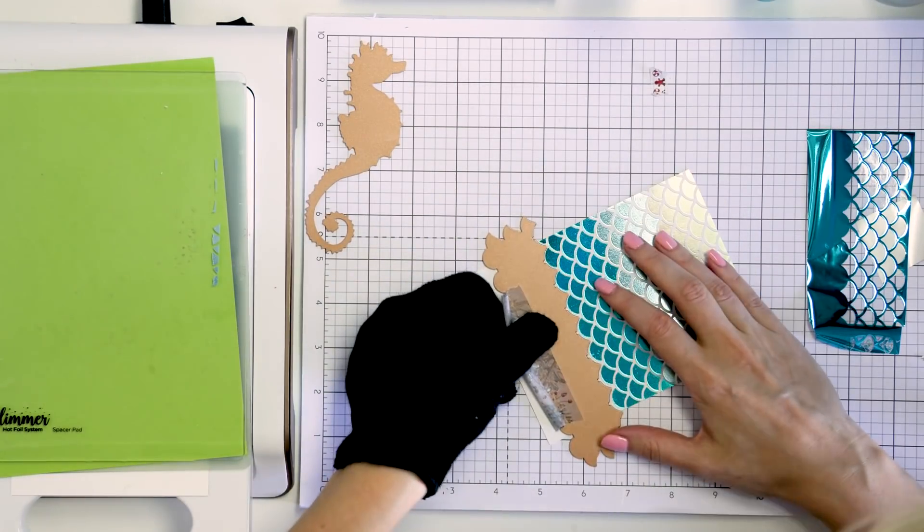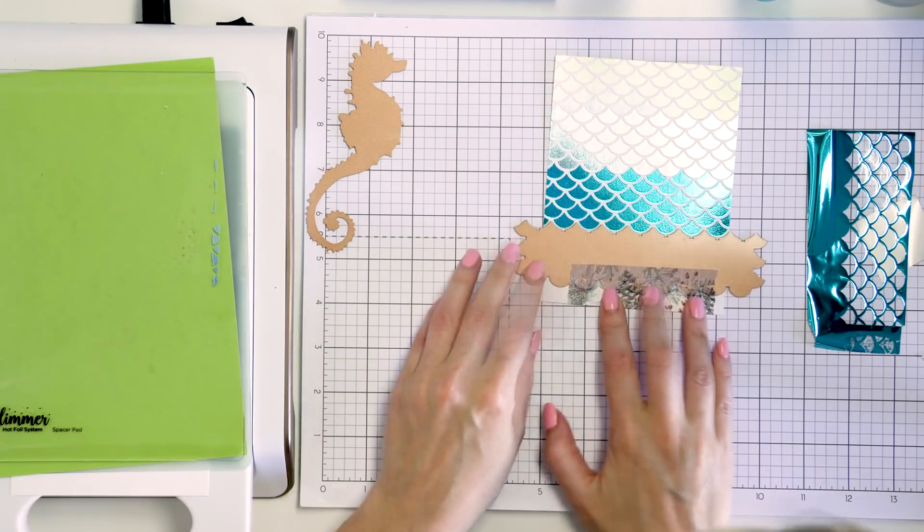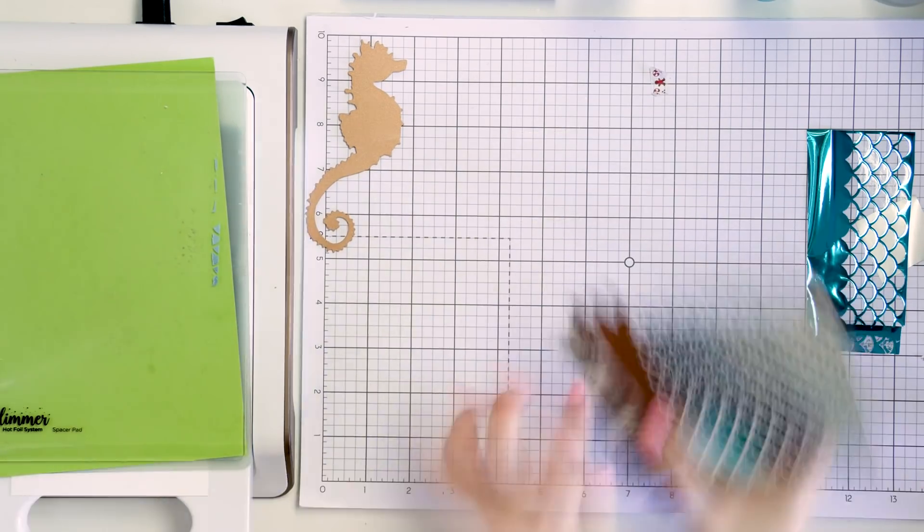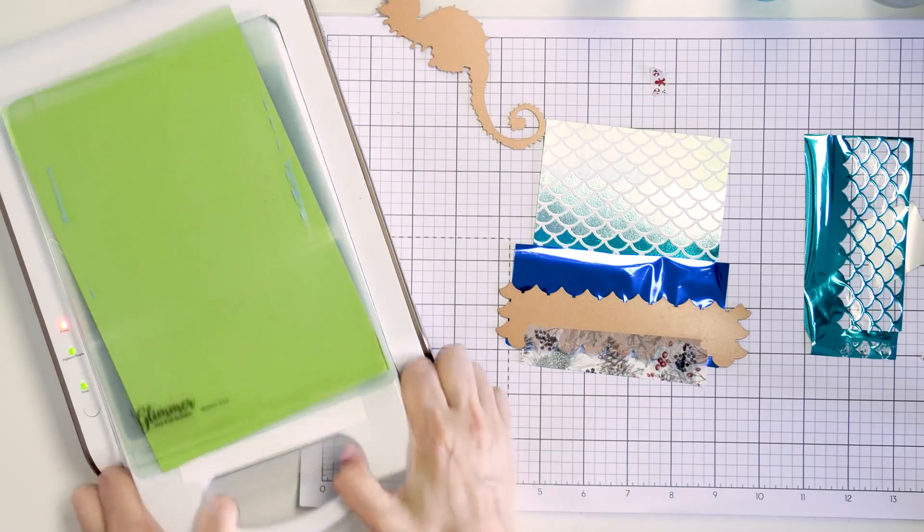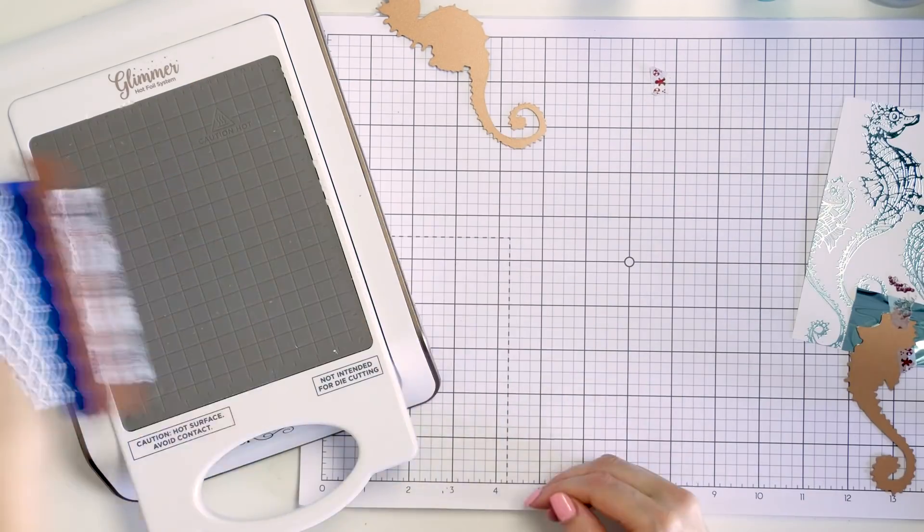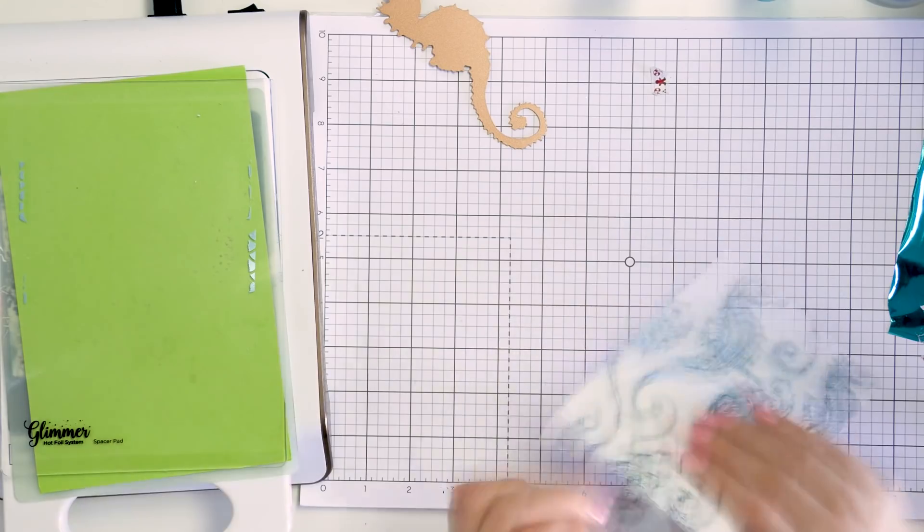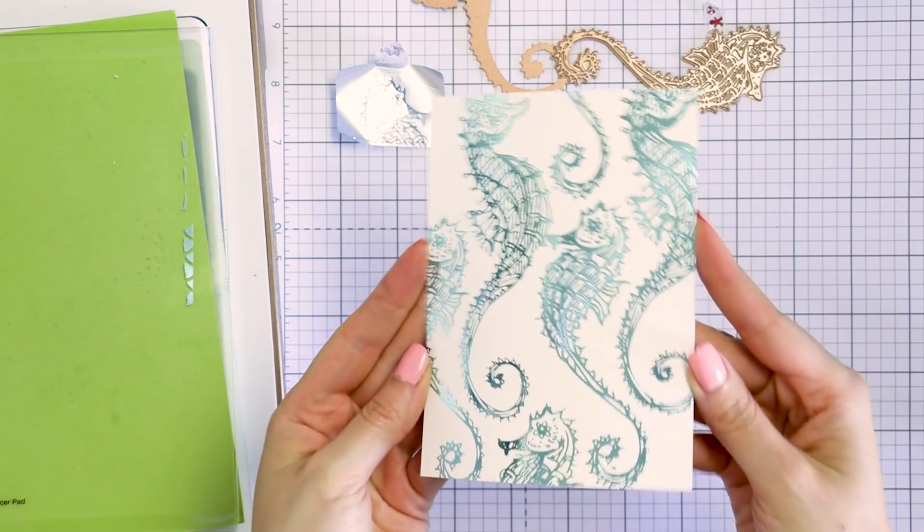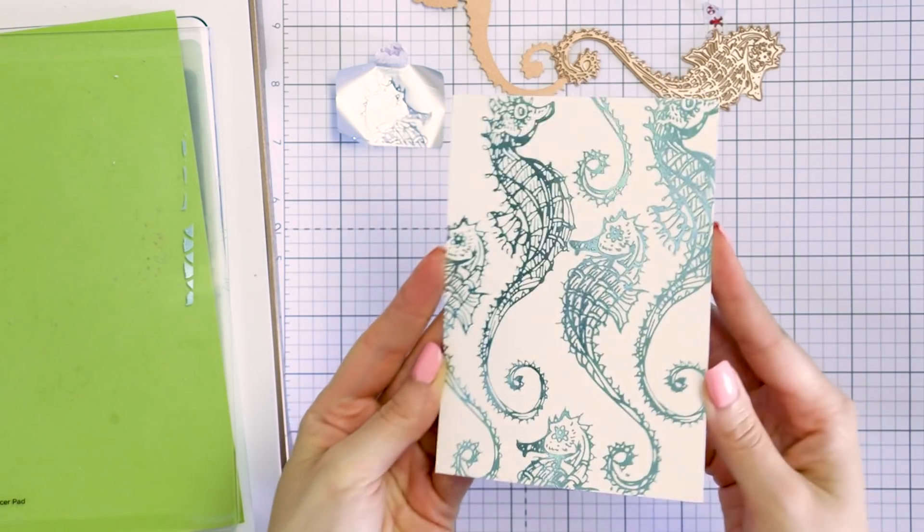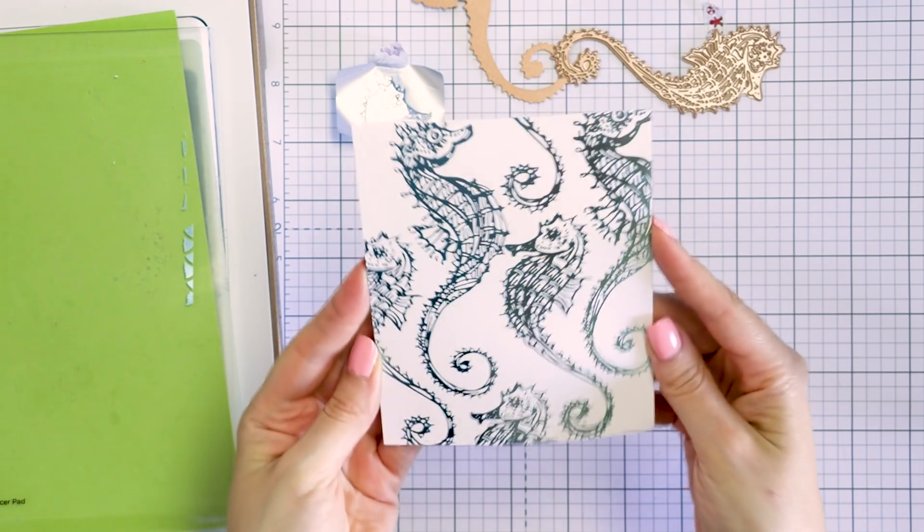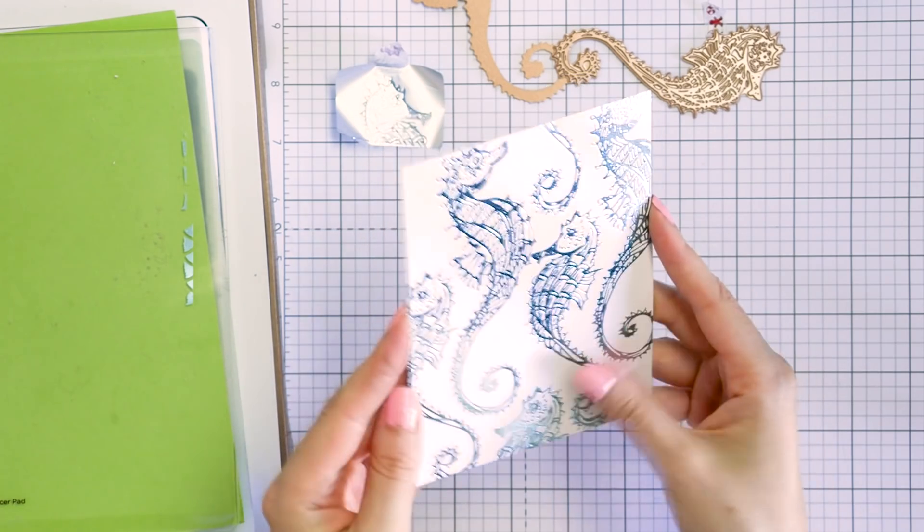I just need to add that last strip to finish this background and I'm ready to use it on a card. While I did finish my seahorses background, I didn't actually use it for a card today, perhaps in the future. I still wanted to show you how you can use your individual glimmer plates to create beautiful backgrounds for your cards.